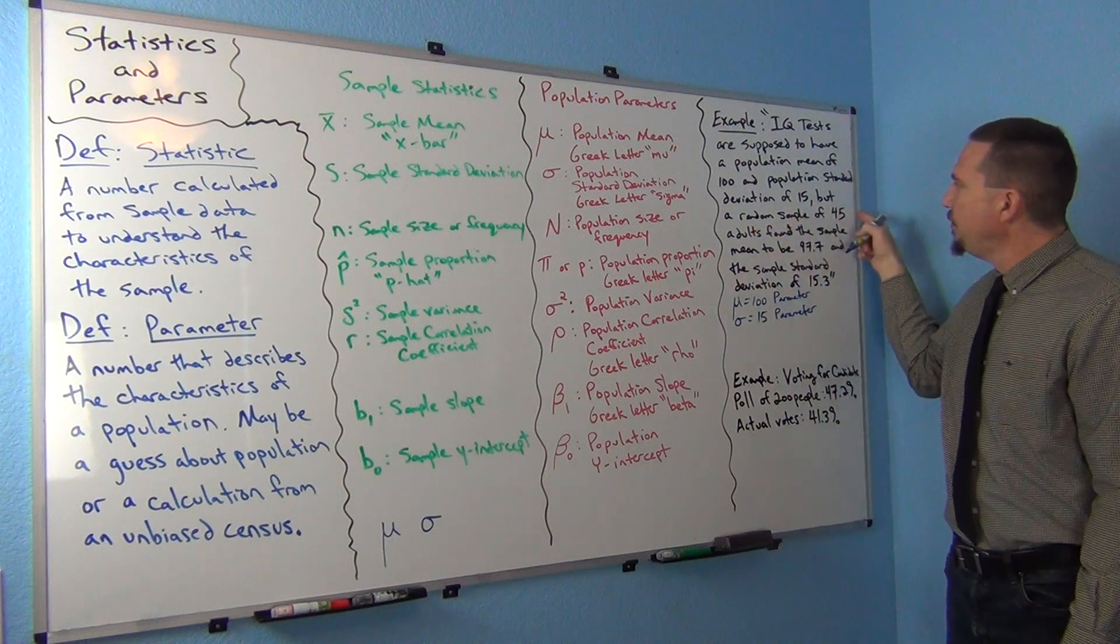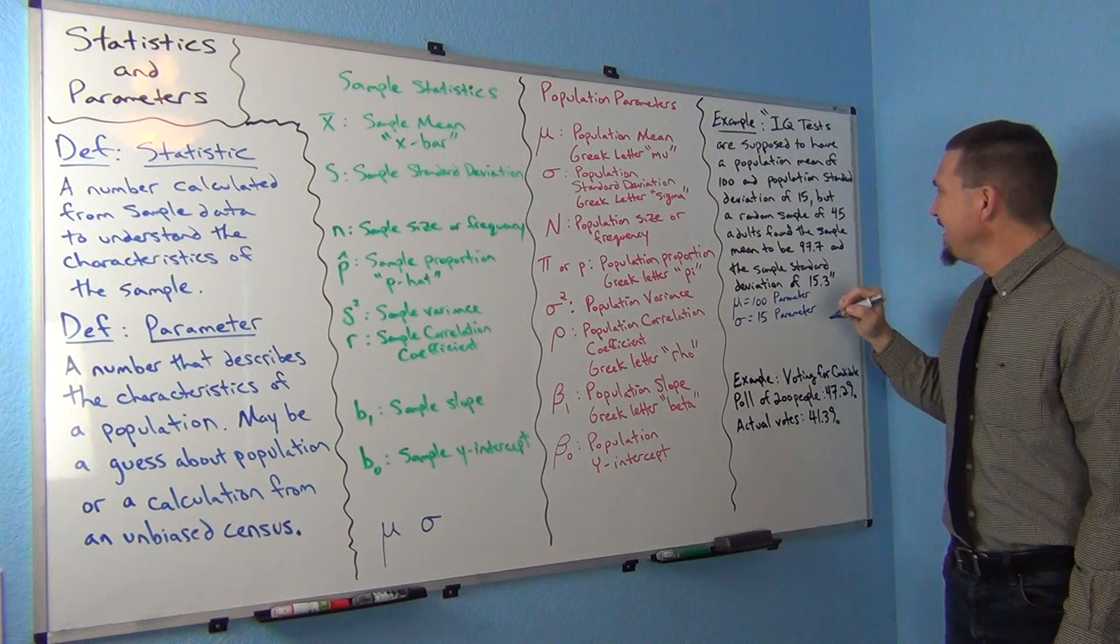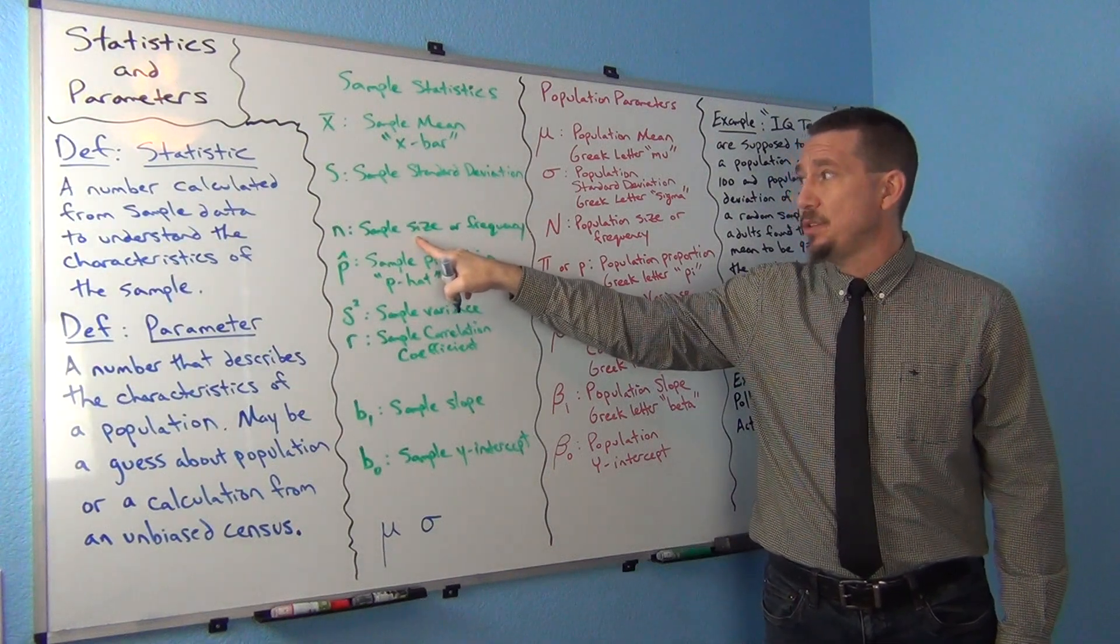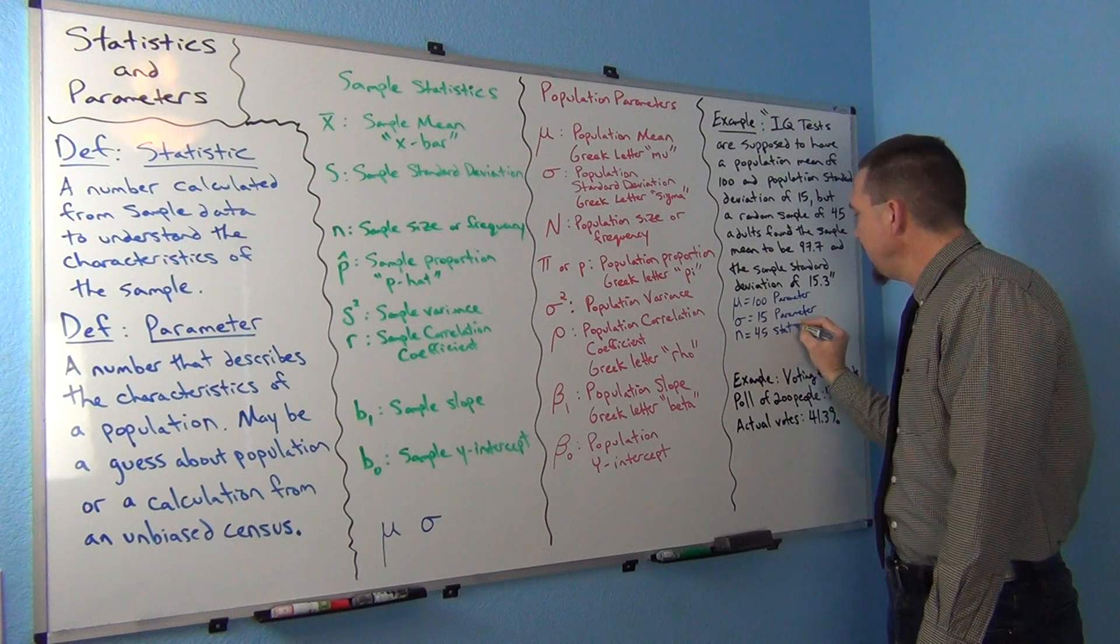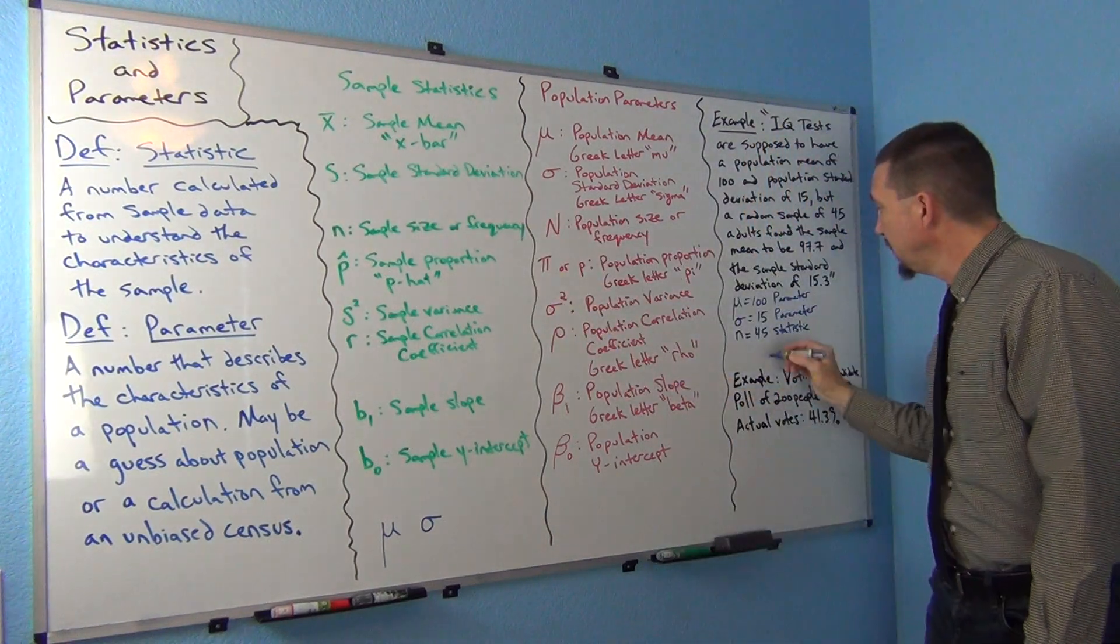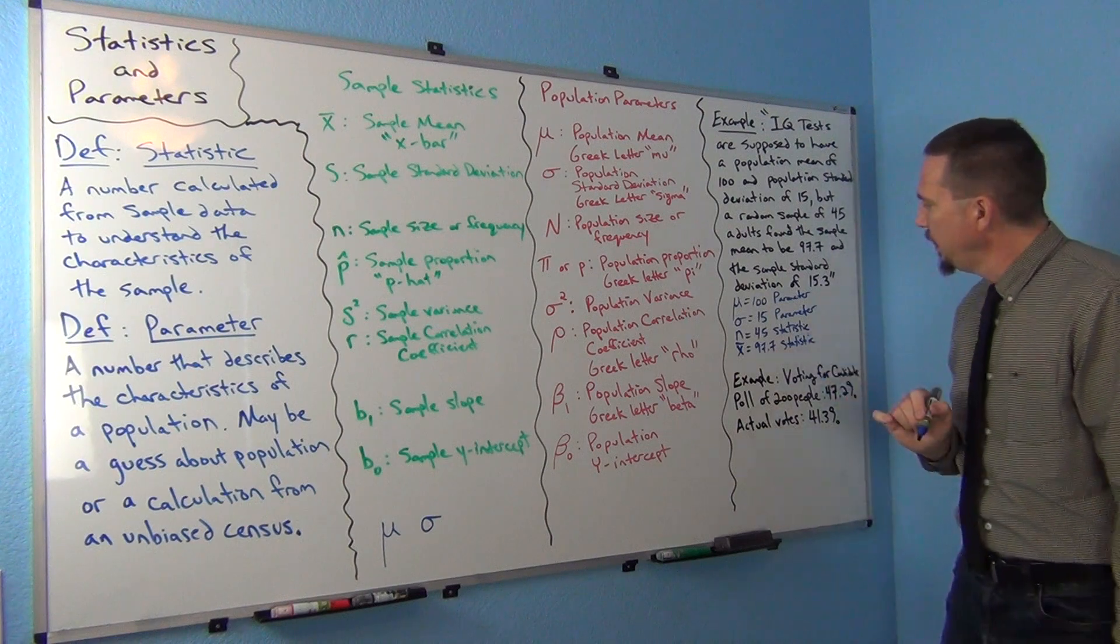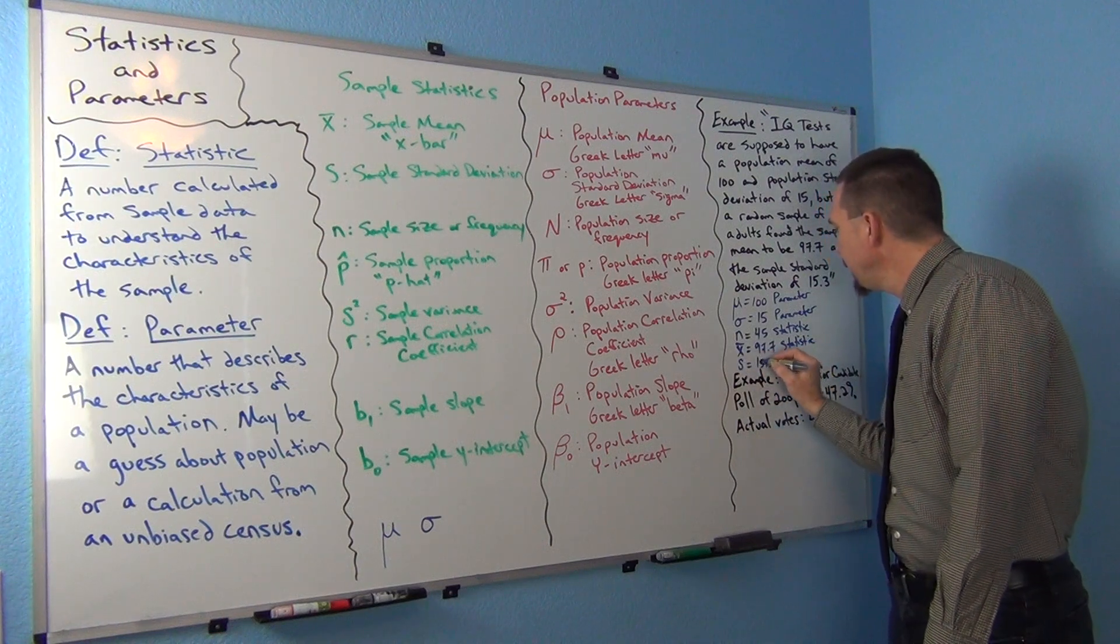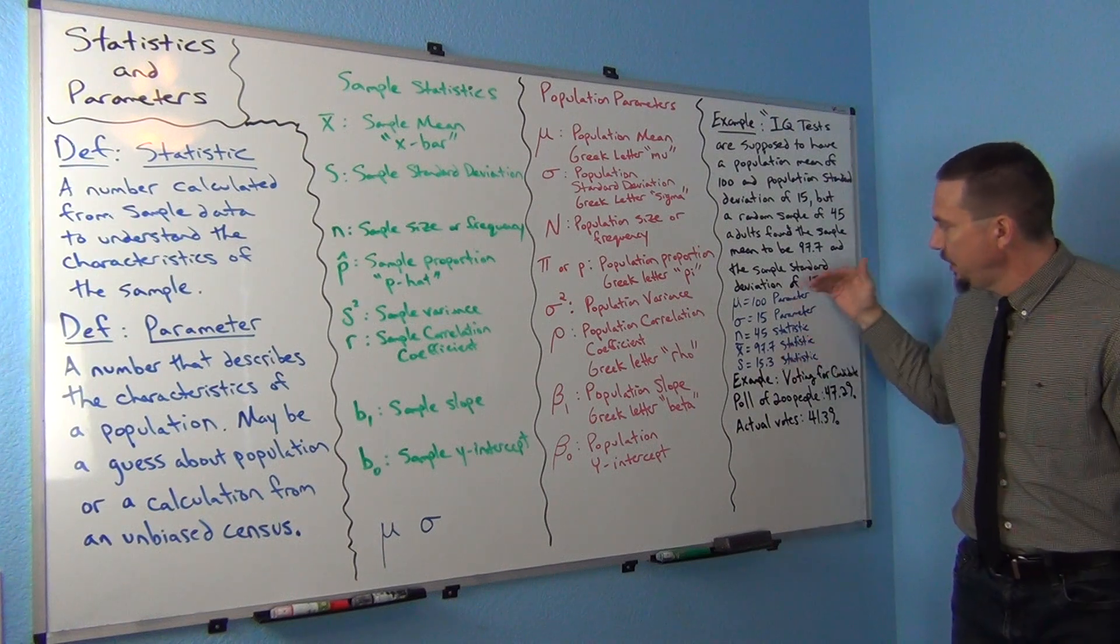But now they said they took a random sample of 45 adults. So 45 adults, that's the number of people in your sample data. That's going to be sample size, how many people or objects are in your data. That's the lower case n. So lower case n is going to be 45, and that was a statistic. The sample mean, x bar, is 97.7. That's also a statistic. It came from sample data. And sample standard deviation, that's our letter s. So that was 15.3. We're going to write statistic next to that just to know which one was sample data and which one was the population.